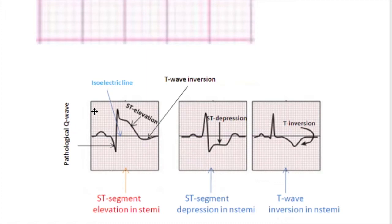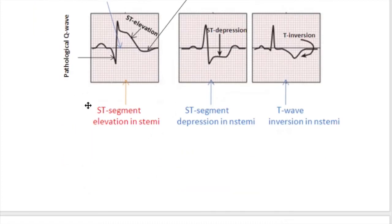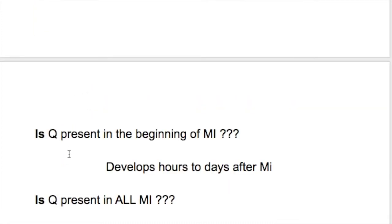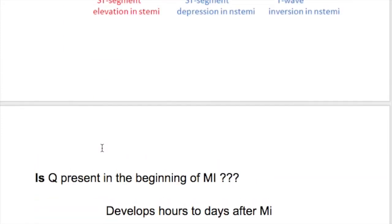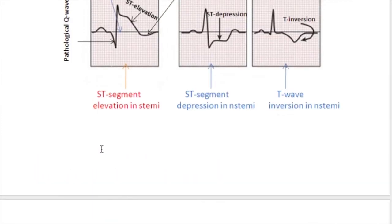Pathological Q waves are usually seen in myocardial infarction. In acute MI, the Q wave develops about four to six hours after the infarction starts and may take a few days to fully develop. In the early stages it may be absent, so the absence of a Q wave does not exclude myocardial infarction.